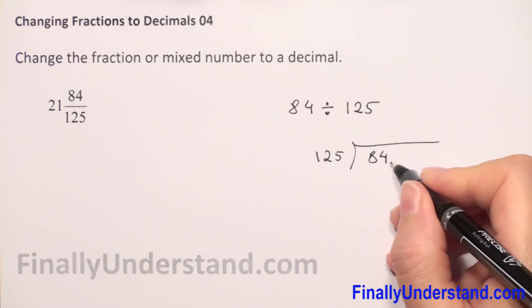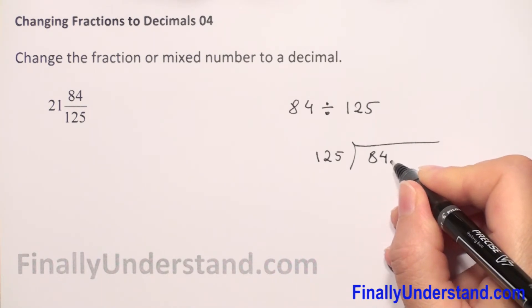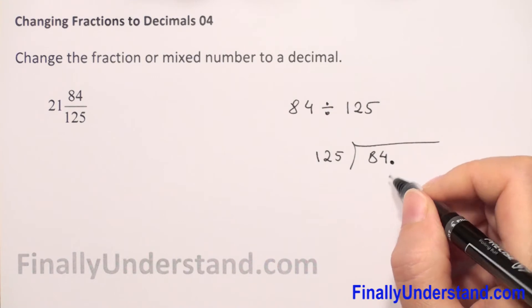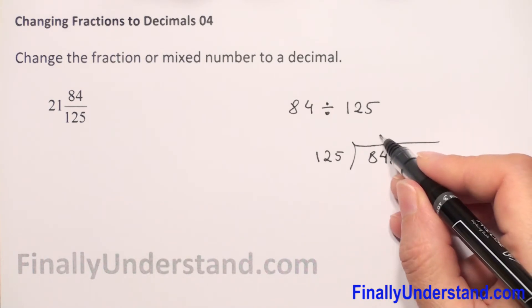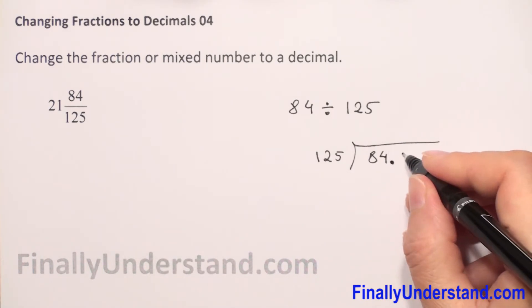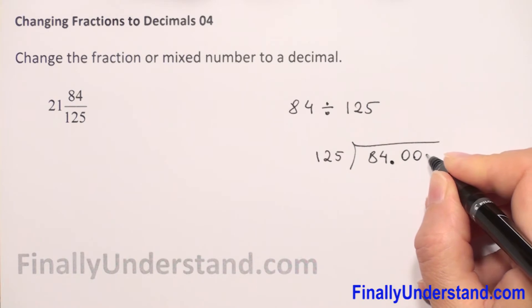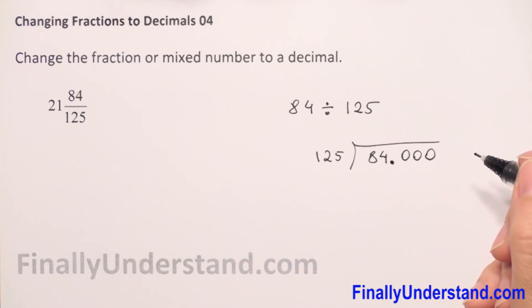84 is a whole number, so after 84 is the decimal point because we cannot put 125 into 84, it will be zero. I will add extra zeros. Let's put three at the beginning to do this long division.